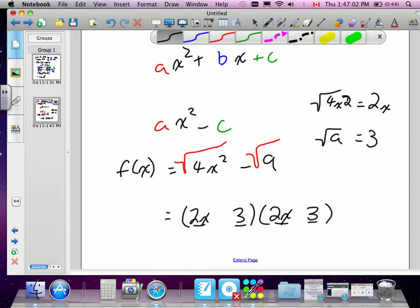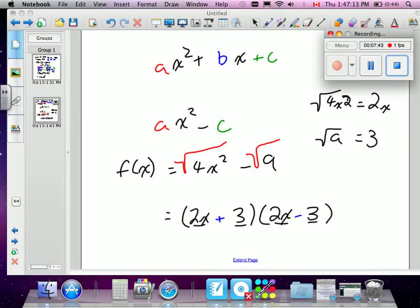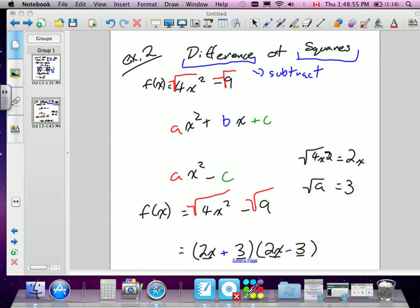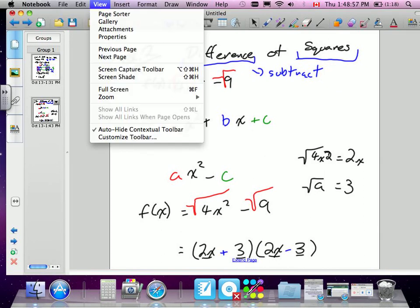Then I find the square root of 9. Square root of 9 on the side is 3. So the last terms are both 3. Here's the only, I guess, tricky part. One of the signs has to say plus. One of the signs has to say minus.